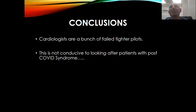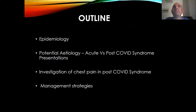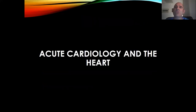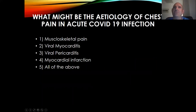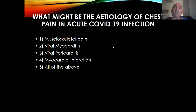My own interest in this comes from doing cardiac MRI, which lends itself to myocarditis. With Hannah Sinclair we lead the post-COVID cardiology side in South East London. I'll briefly cover epidemiology — Simon's already covered that — and focus on aetiology in terms of acute versus post-COVID syndrome presentations of chest pain, investigation, and management strategies. A poll asks: what might be the aetiology of chest pain in acute COVID-19 — musculoskeletal, viral myocarditis, viral pericarditis, infarct, or any of the above?